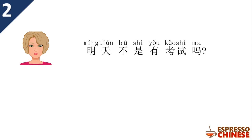明天不是有考试吗? Tomorrow — here 不是 something 吗 means 'isn't it?' So 不是 means 'isn't it that 有考试?' — isn't it that you have a test tomorrow? It's a rhetorical question asking: is that true?